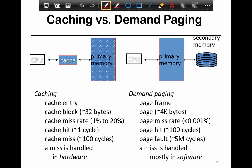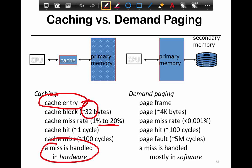Let's take a look at caching versus demand paging. With caching, there is something known as a cache entry, which is the size of the data structure — the smallest block used for allocating space in the cache itself. It's typically about 32 or 64 bytes. Hit performance and miss performance are both comparable to CPU clock cycles, and most importantly, a miss is handled entirely in hardware.